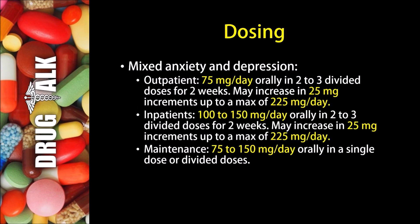Now what about dosing with Maprotiline? In mixed anxiety and depression disorder, if the patient is an outpatient, they may use 75 mg per day orally in 2 or 3 divided doses for 2 weeks, then increase in 25 mg increments up to a maximum of 225 mg per day. If the patient is an inpatient, however, they may start off with 100 to 150 mg per day, again orally in 2 or 3 divided doses for 2 weeks, and then increase in 25 mg increments up to 225 mg per day.